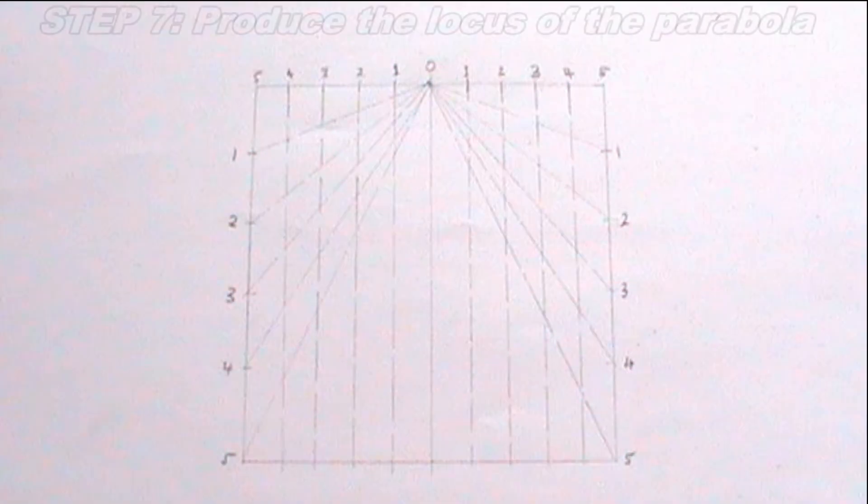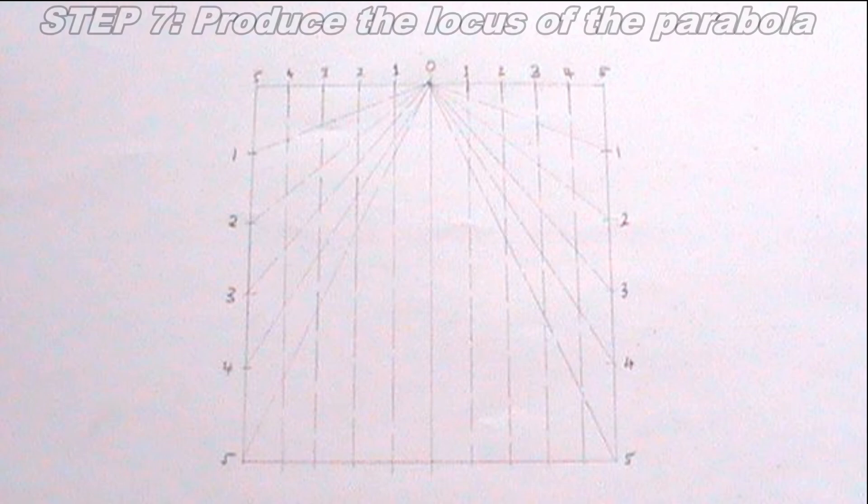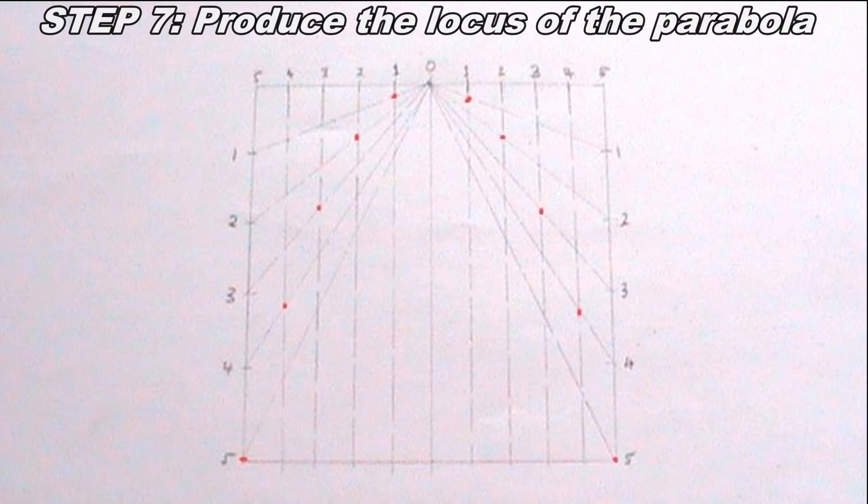Having completed all of these steps it is time to produce the locus of the parabola. To produce the locus of the parabola I will use my French curve to draw a curve passing through the points where the lines I drew from point 0 intersects the vertical lines. I'm talking about these points I highlighted with red.